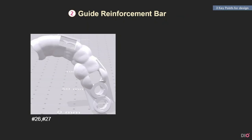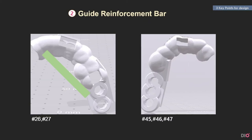The second topic is the design concept of the guide reinforcement bar. In the free end case, since there are no teeth to support the guide from the rear, there is a high possibility of movement. Therefore, the surgeon should fix the guide with hands or tools so the guide does not tilt while drilling. A guide reinforcement bar is attached to the guide to improve stability. One end is on the implant placement location and the other end is on the opposite side. This applies to guides for placing multiple implants such as positions 45, 46, and 47.